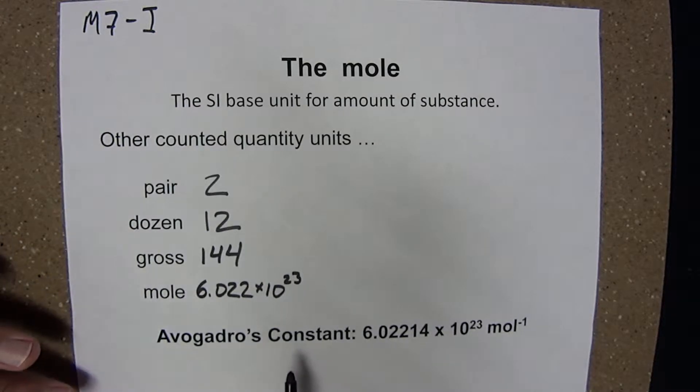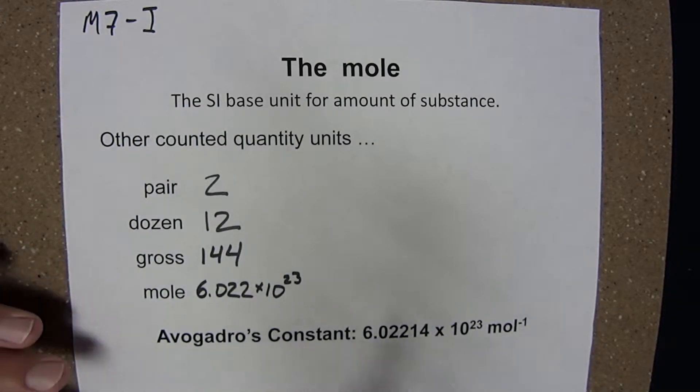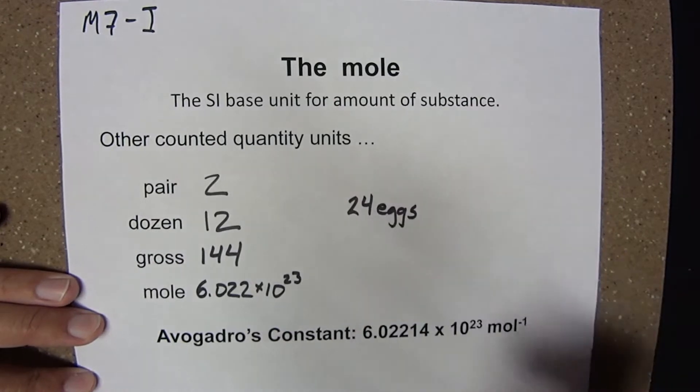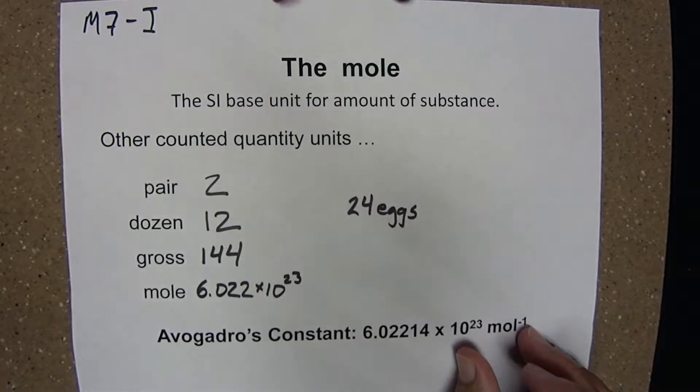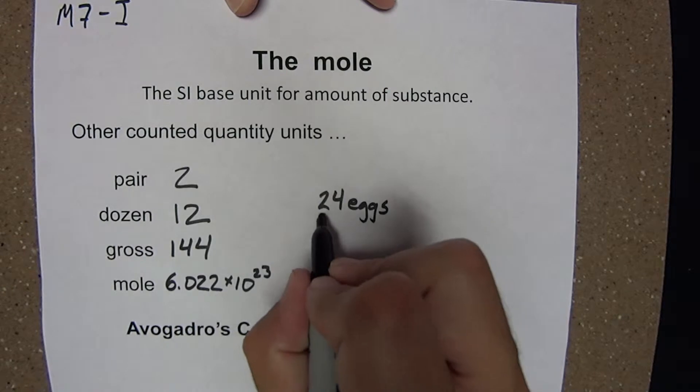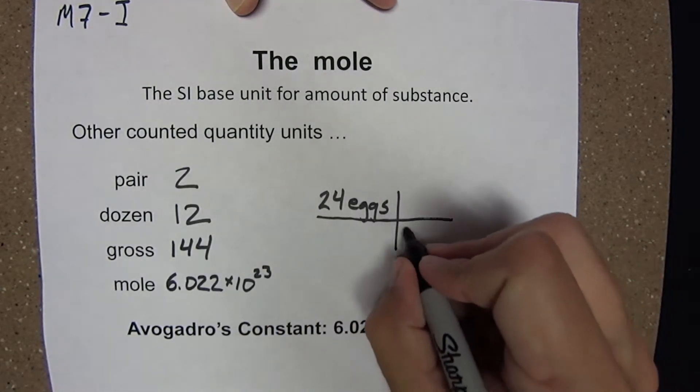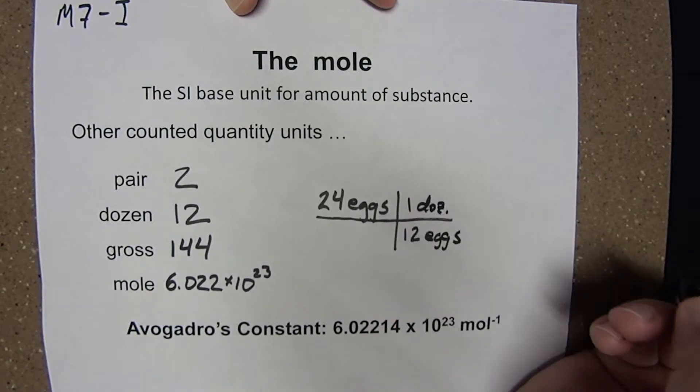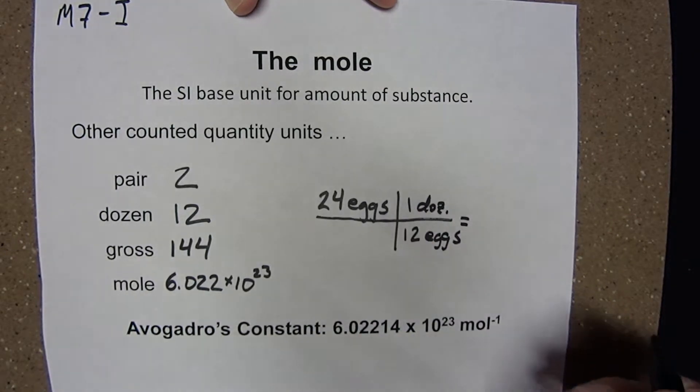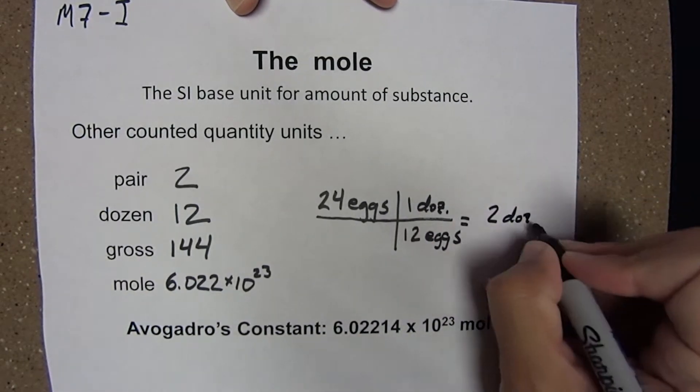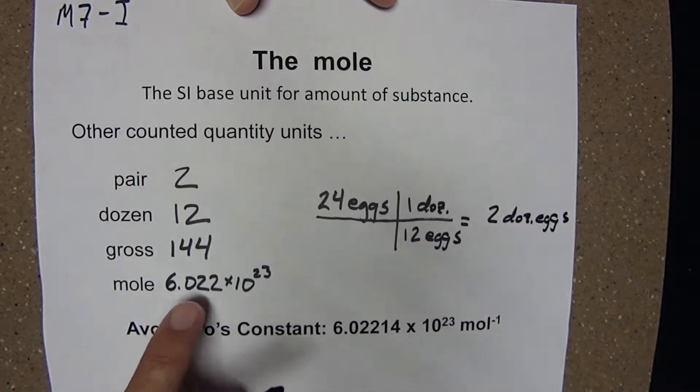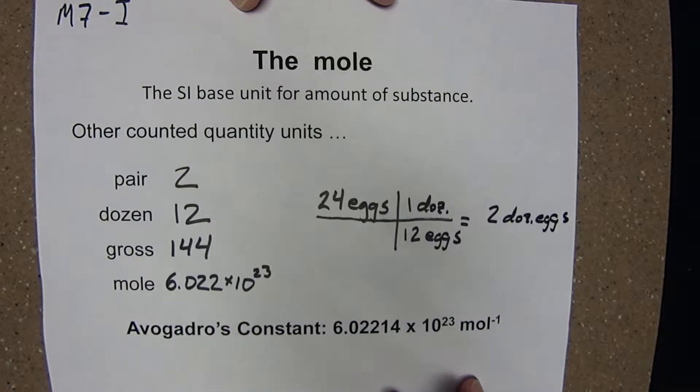Think of it as a conversion factor. A way to get from a counted quantity to mole. For example, if we were told we had 24 eggs and we wanted to convert that to dozen eggs, 12 would be the conversion factor that's used. There are 12 eggs in one dozen eggs. This simple arithmetic tells me I have two dozen eggs in 24 eggs. The mole is used in much the same way, just dealing with a much, much larger counted quantity.